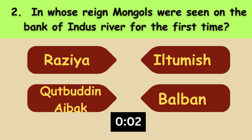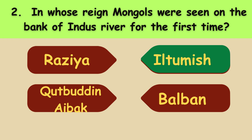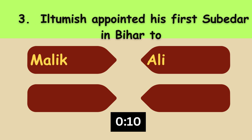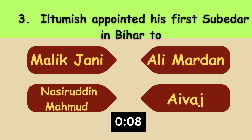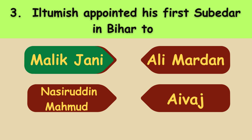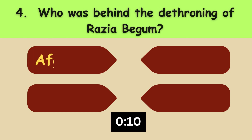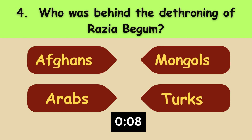Iltutmish appointed his first subedar in Bihar. The answer is Malik Jani. Who was behind the dethroning of Razia Begum? The answer is the Turks.